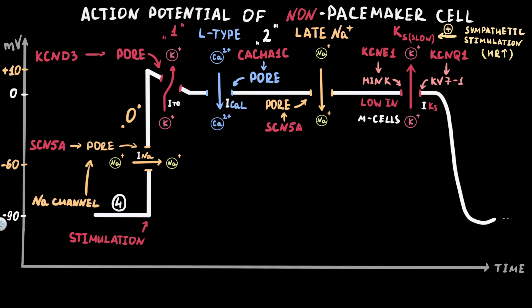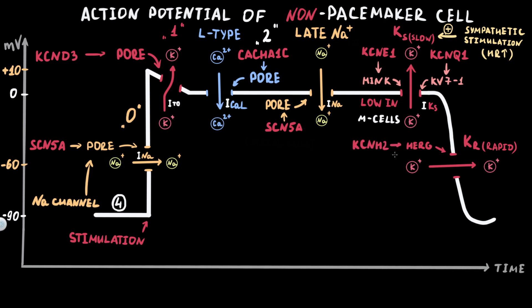The next phase is Phase III, or repolarization, which is provided by different outward potassium currents. The first current responsible for termination of the action potential plateau and initiation of repolarization is the rapid potassium current. Rapid potassium channels activate relatively rapidly and maintain significant outward current during Phase III. One of the most important proteins forming the rapid potassium channel is the HERG protein, encoded by KCNH2. Inherited loss-of-function mutations in KCNH2 causing a decrease in rapid potassium current are associated with prolongation of action potential repolarization and congenital Long QT syndrome type II. This current is marked as IKr, where R stands for rapid.